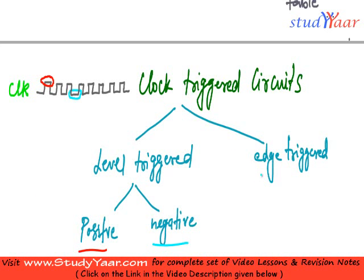Similarly, you can also have edge-triggered circuits. An edge-triggered circuit is active when you have a transition from either 0 to 1 or 1 to 0. Here you are having a 0-to-1 transition — from low-level logic going to high-level logic. This kind of transition is known as leading edge-triggered.